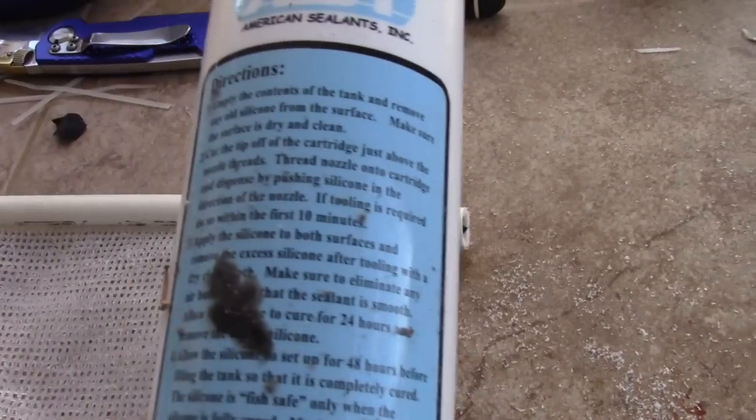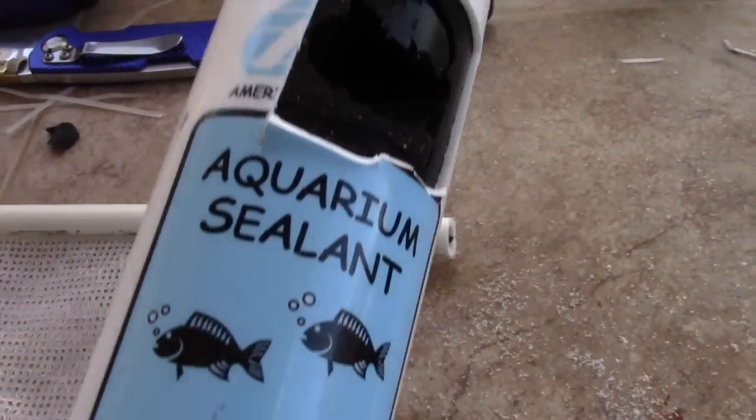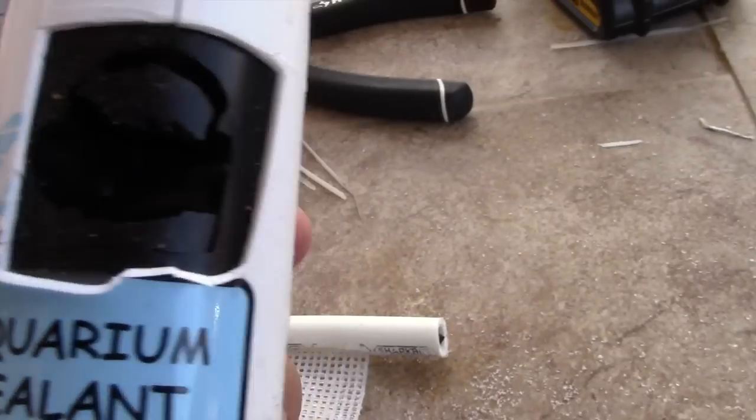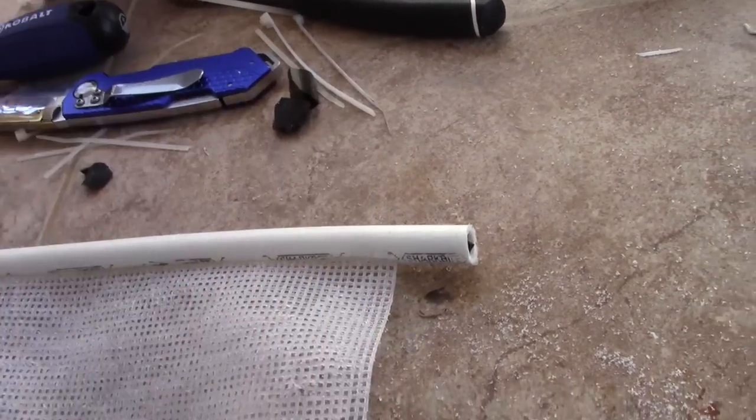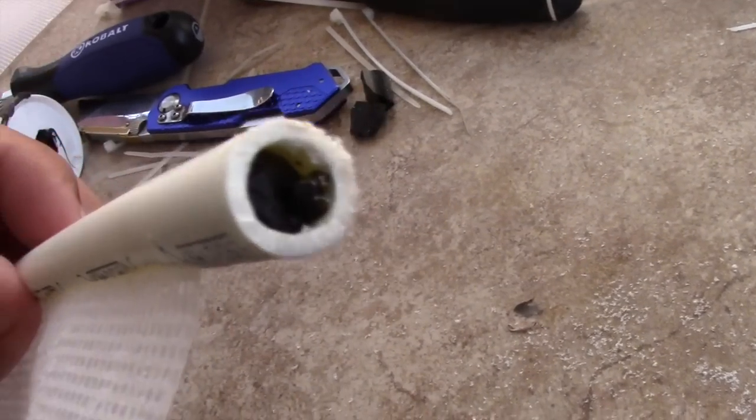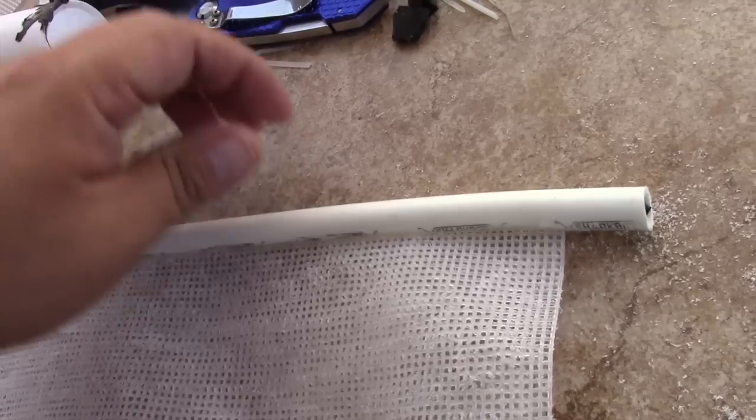You can go to Petsmart, Petco, pick some up - some aquarium sealant. I actually had to cut out a piece and just stuff it in there because my silicone was too old.